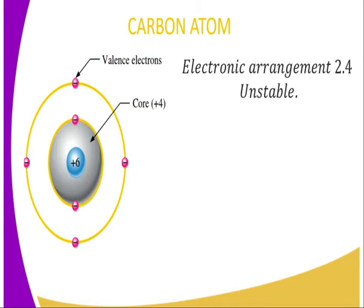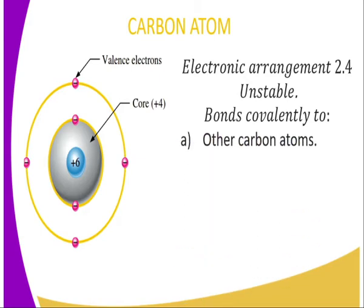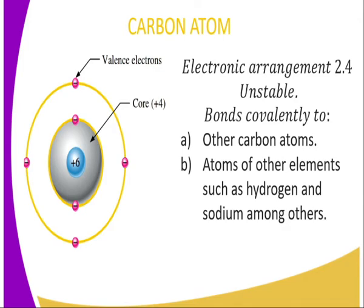This tells us that the carbon atom is unstable. For it to attain stability, it bonds covalently to atoms of other carbons, and it can also bond covalently to atoms of other elements, such as hydrogen and sodium, among others. There are several atoms to which the carbon atom can bond covalently.